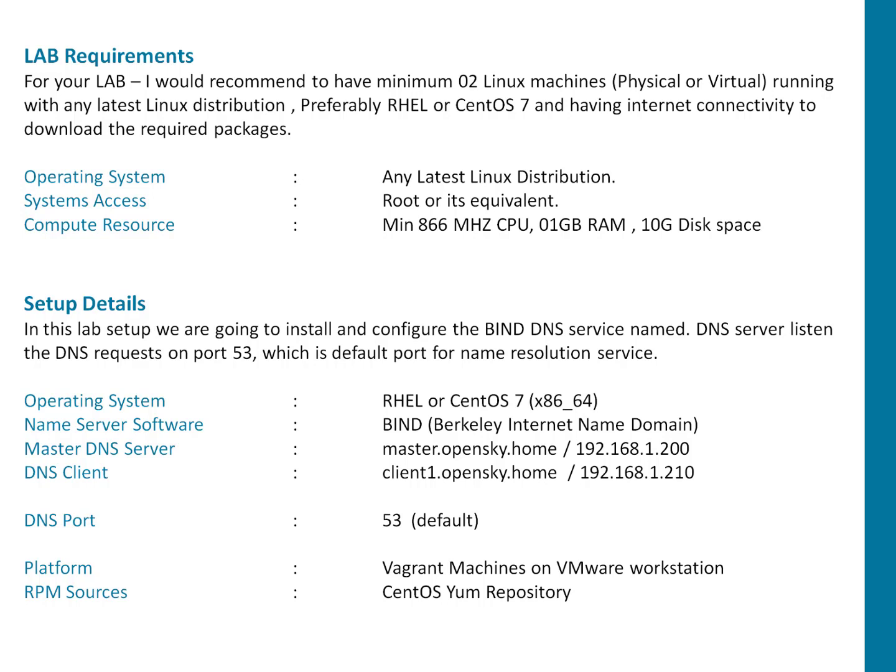On my lab setup, I have a machine with CentOS 7 installed — that's 64-bit. For name server software, as we are discussing, I will be installing BIND. My master DNS server's name is master.opensky.home. Opensky.home is the domain name I will be configuring, and my master DNS server has the IP 192.168.1.200.